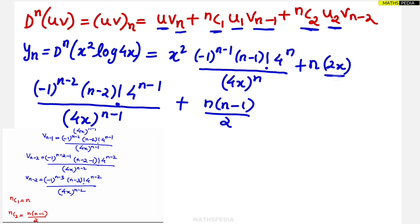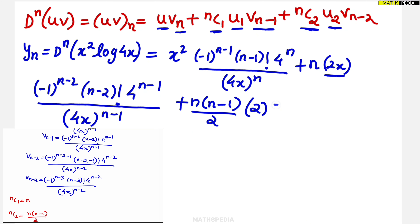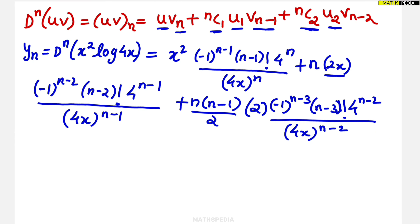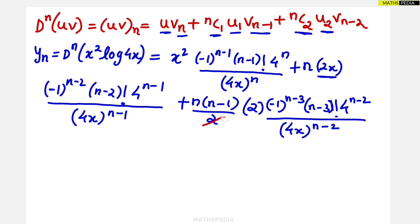From the last term, the 2 in nC2 and the 2 from u2 cancel. The rest of the terms can be written as they are without further simplification, as combining them would get complicated. So the final answer yn is written with x² as the starting term.